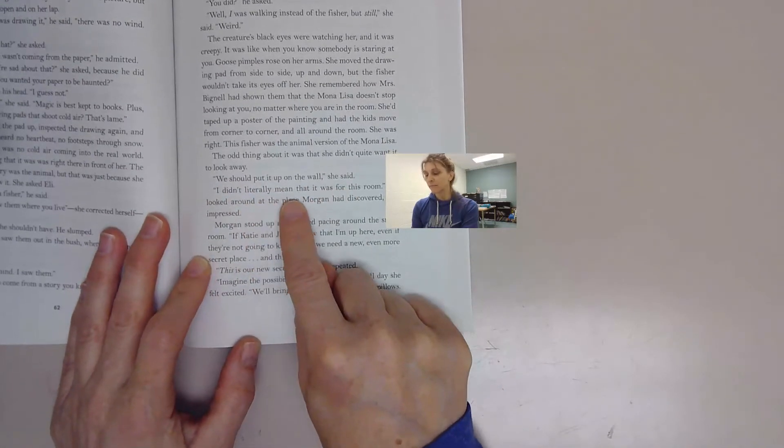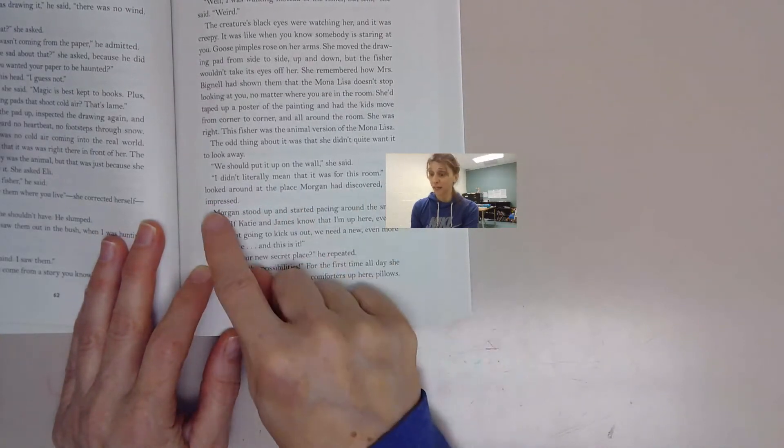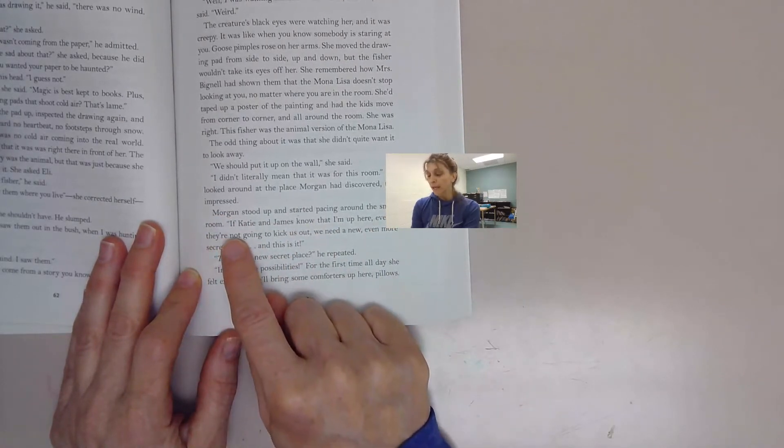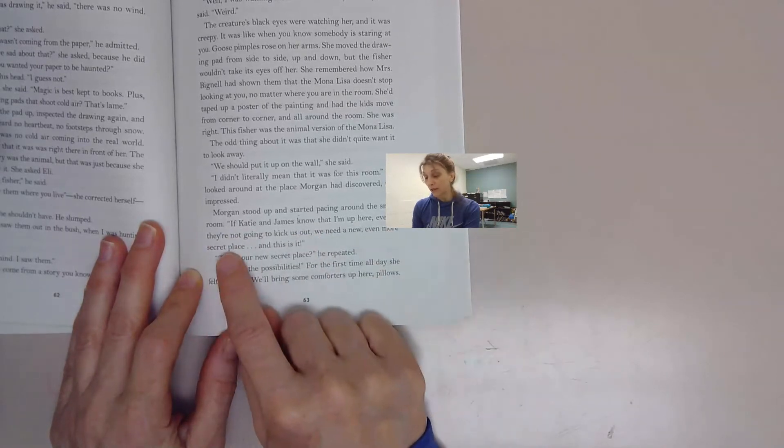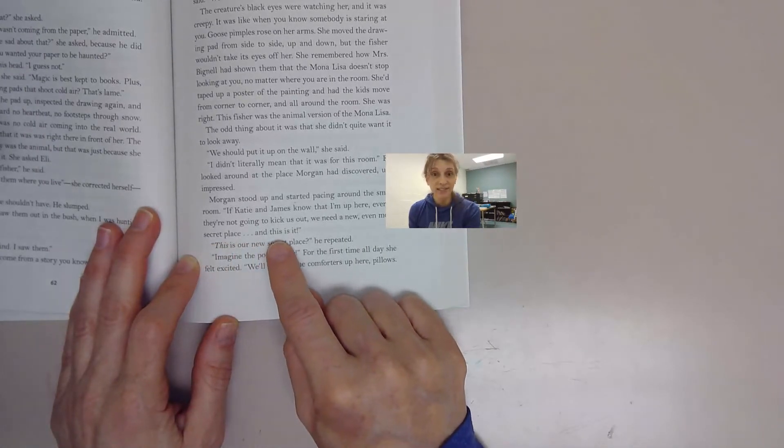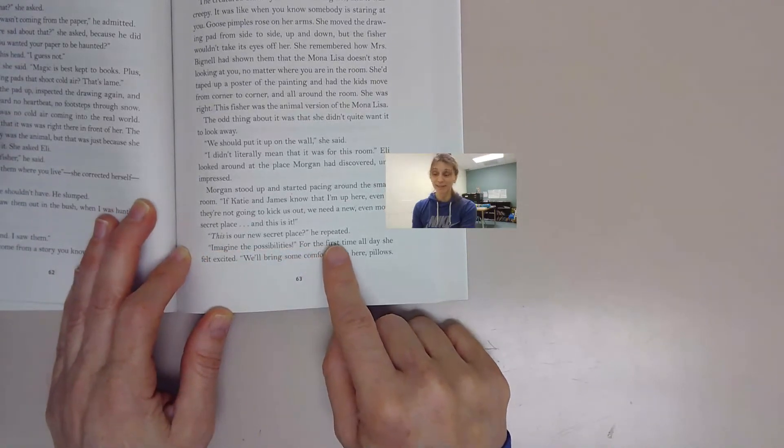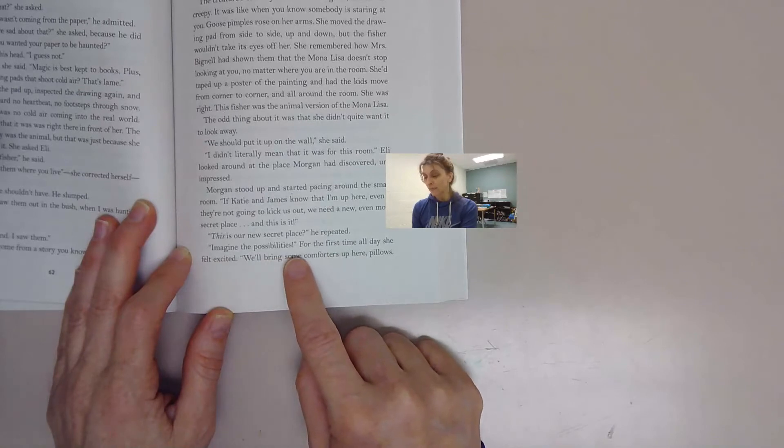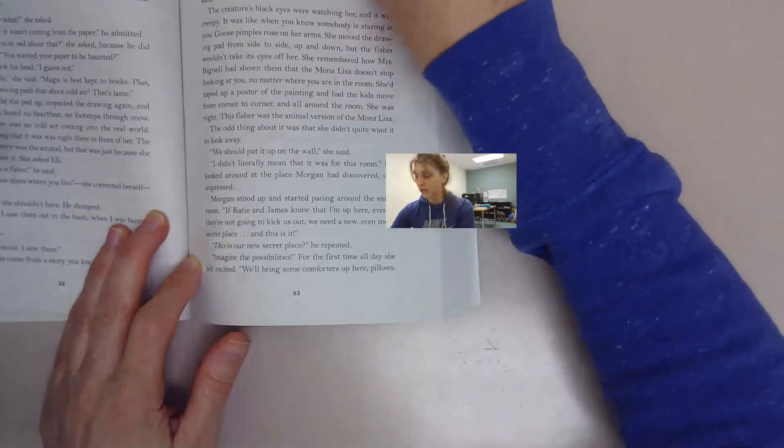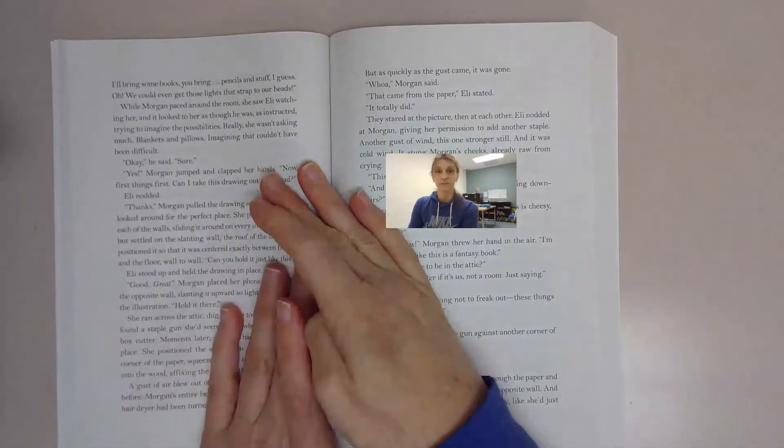The odd thing about it was that she didn't quite want it to look away. We should put it up on the wall, she said. I didn't literally mean that it was for this room. Eli looked around at the place Morgan had discovered, unimpressed. Morgan stood up and started pacing around the small room. If Katie and James know that I'm up here, even if they're not going to kick us out, we need a new even more secret place and this is it. This is our new secret place, he repeated.